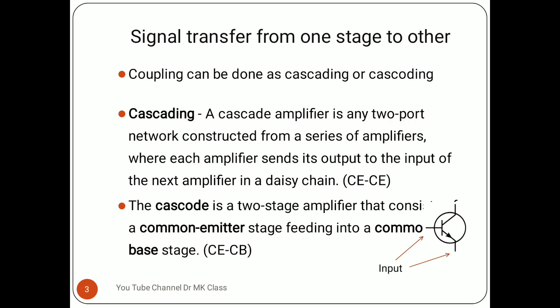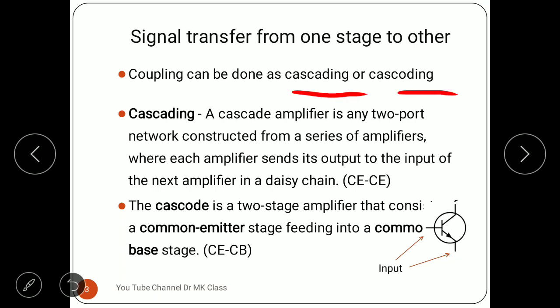Coupling can be done as cascading or cascoding — these two keywords are important. Cascading is where a two-port network is constructed from a series of amplifiers where each amplifier sends its output to the input of the next amplifier. For example, in an audio amplifier we use CE-CE: the output of the first common emitter stage is connected to the base of the next transistor.